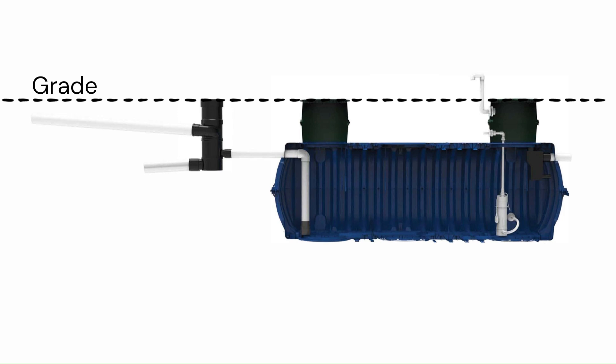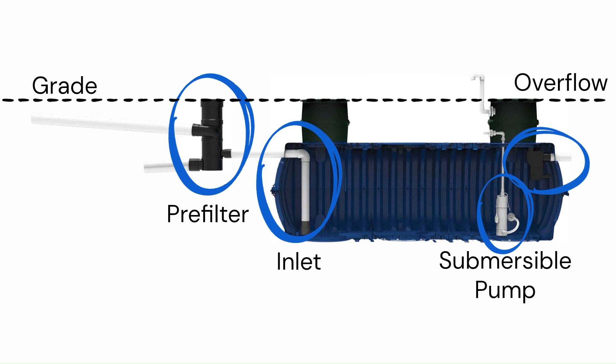The major components that will be covered in this video include the rainwater pre-filter, the tank inlet and overflow, the pump with an electrical line, and an air vent.